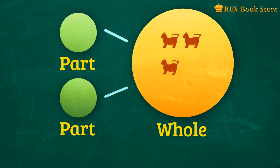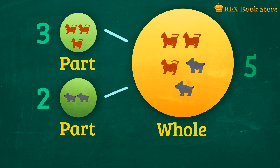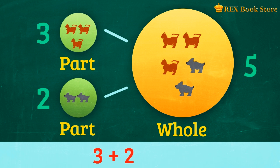Can you count how many kittens there are? There are three kittens. How many puppies are there? There are two puppies. How many animals are there all in all? Let's use a number bond. We'll put three here and two in the other. Three kittens and two puppies make how many? There are five animals. Three plus two make five.